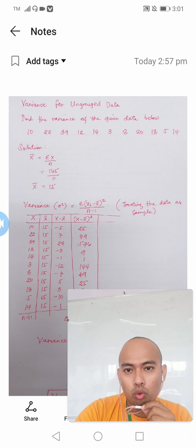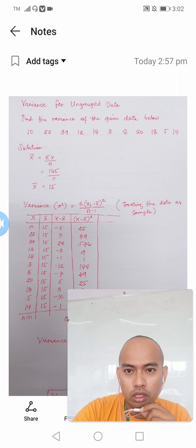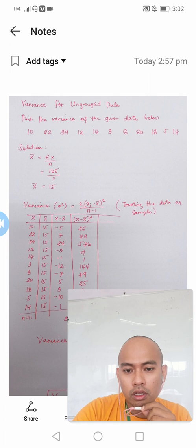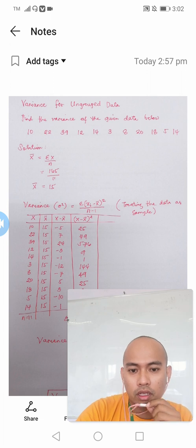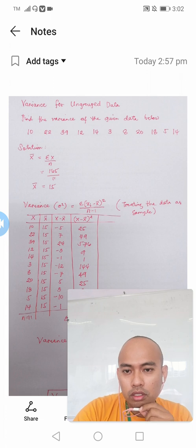We have 10, 22, 39, 12, 14, 3, 8, 20, 18, 5, and 14. So in order for us to compute for the variance for this ungrouped data, we need to find first the value of the mean of this particular data set. So for us to be able to find the mean, we will be utilizing the arithmetic mean since our data is ungrouped. It is an ungrouped data.